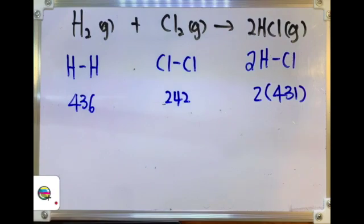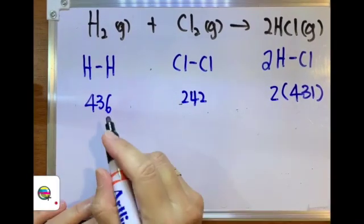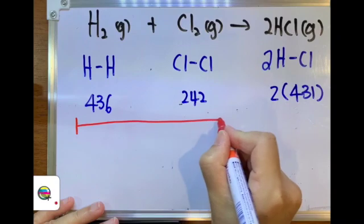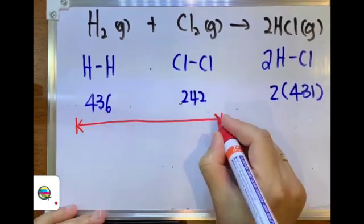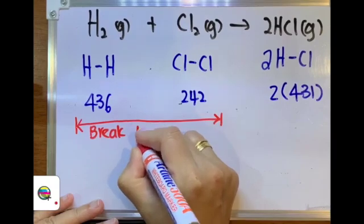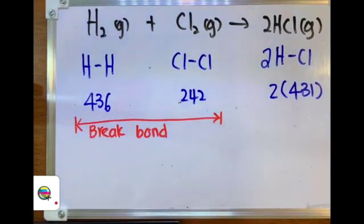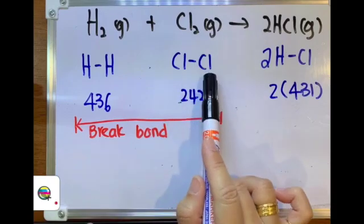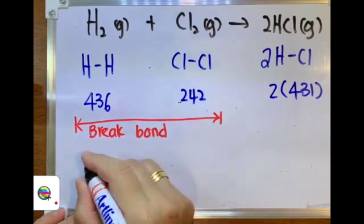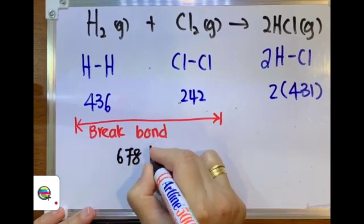Now, next step: we are going to calculate the total energy absorbed in breaking the chemical bonds. We need energy to be absorbed in breaking all the chemical bonds in the reactants, which I draw in this red color section. The total energy absorbed to break the H-H single covalent bond and the Cl-Cl single covalent bond will be 436 kilojoules plus 242 kilojoules, which means a total of 678 kilojoules.